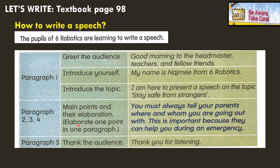You need to elaborate one point in one paragraph. For example: you must always tell your parents where and whom you are going out with. And then you have to elaborate why — this is important because they can help you during an emergency. So you will have one point and then you have to elaborate. And then for the last paragraph, you will thank the audience: Thank you for listening. You can also include the conclusion in the last paragraph.